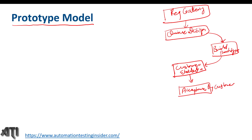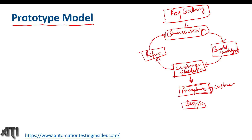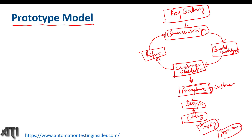In case the customer wants changes to the prototype — if they don't like the ideas given — we refine it based on their feedback. We make changes to the design, build the prototype again, and once the customer is happy, that is customer acceptance. After that, we follow the same procedure as a normal software development model: design, coding, testing, and finally maintenance.